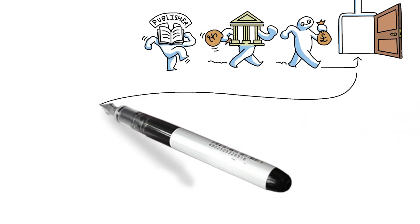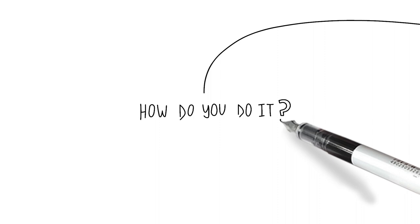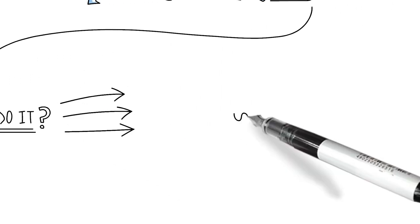So how do you actually do it? There are several different ways to make your work open access, and the most common routes are referred to by colour.